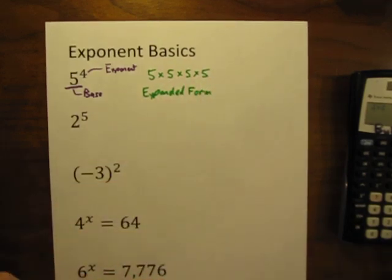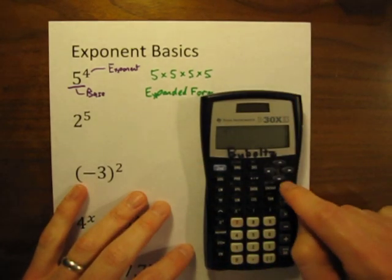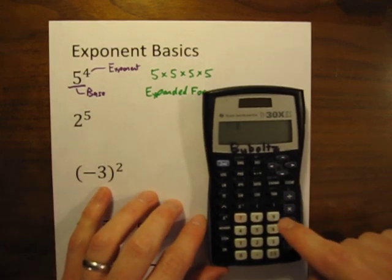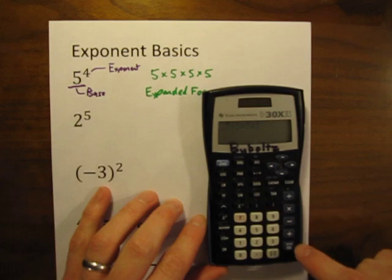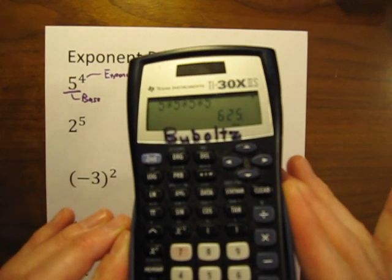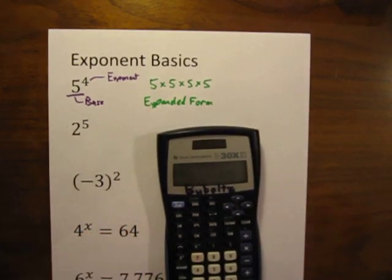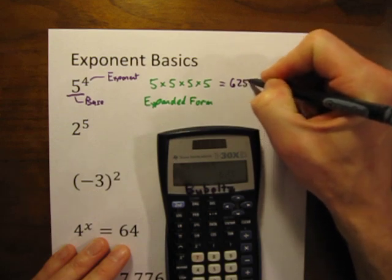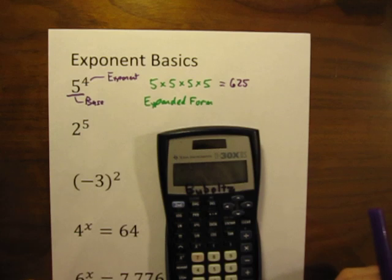And what if you're going to solve it? Well, you could do it a couple of ways. You could turn to your calculator and do 5 times 5 times 5 times 5 equals 625. So we could write that equals 625. So 5 to the 4th power equals 625.